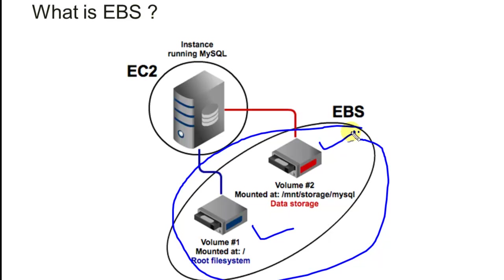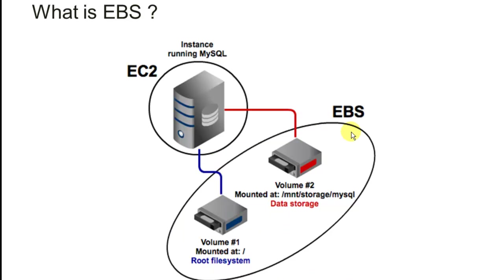EBS volumes can be attached to an EC2 instance in multiple ways. For example, one volume can be mounted where you store the root file system, and another can be mounted for data storage such as MySQL database storage.